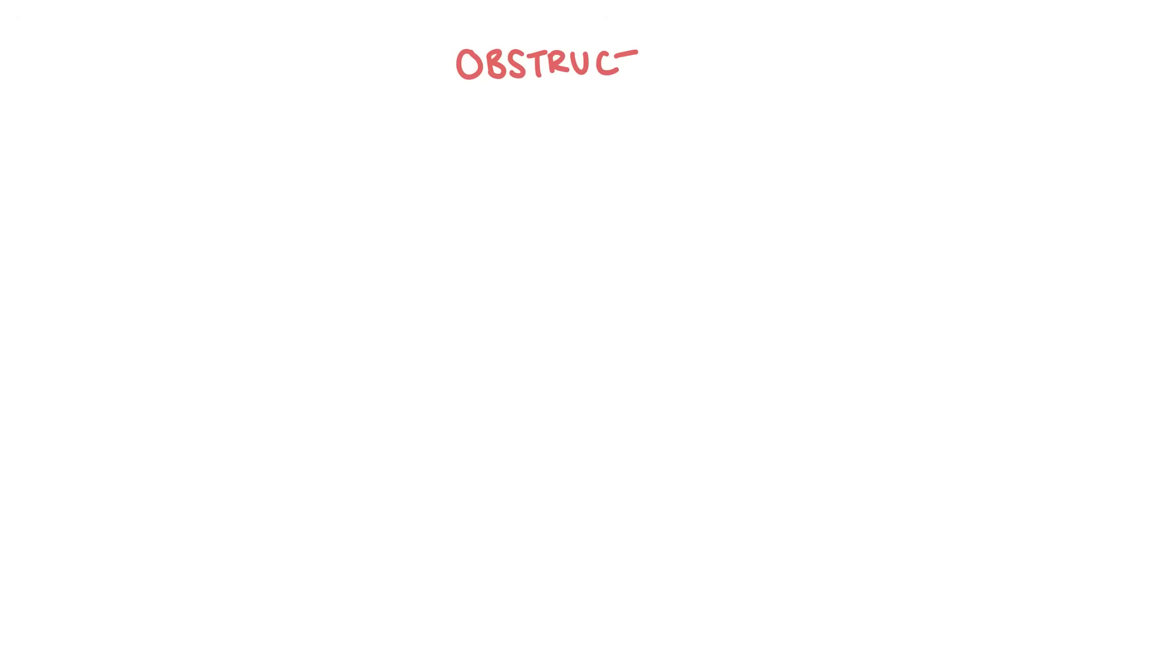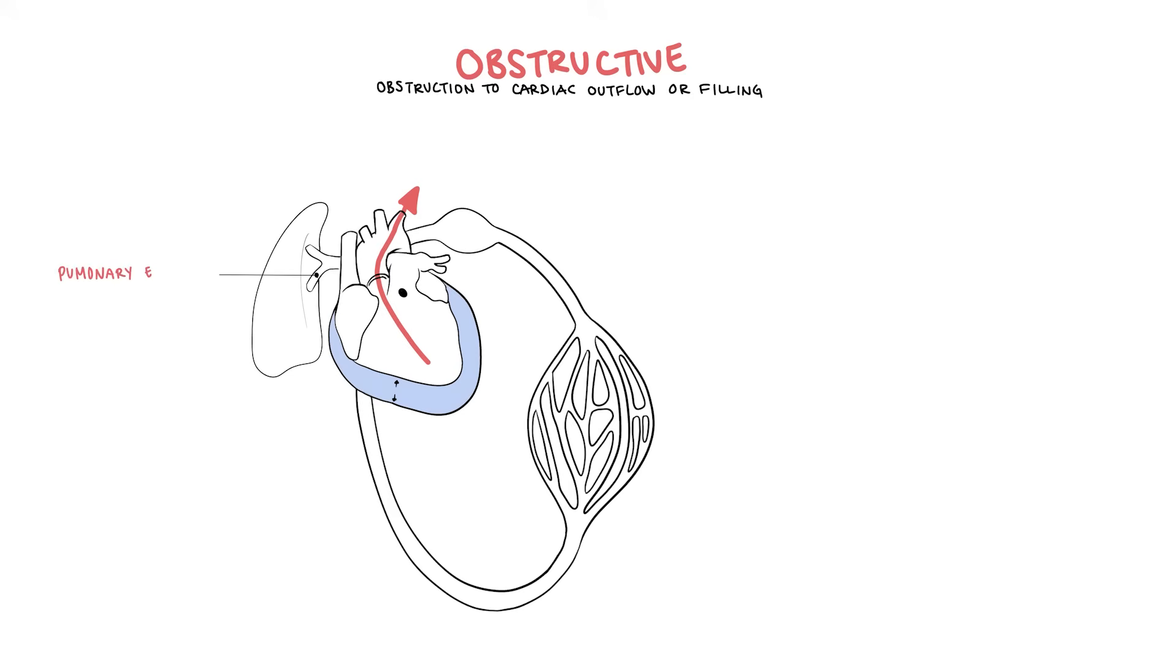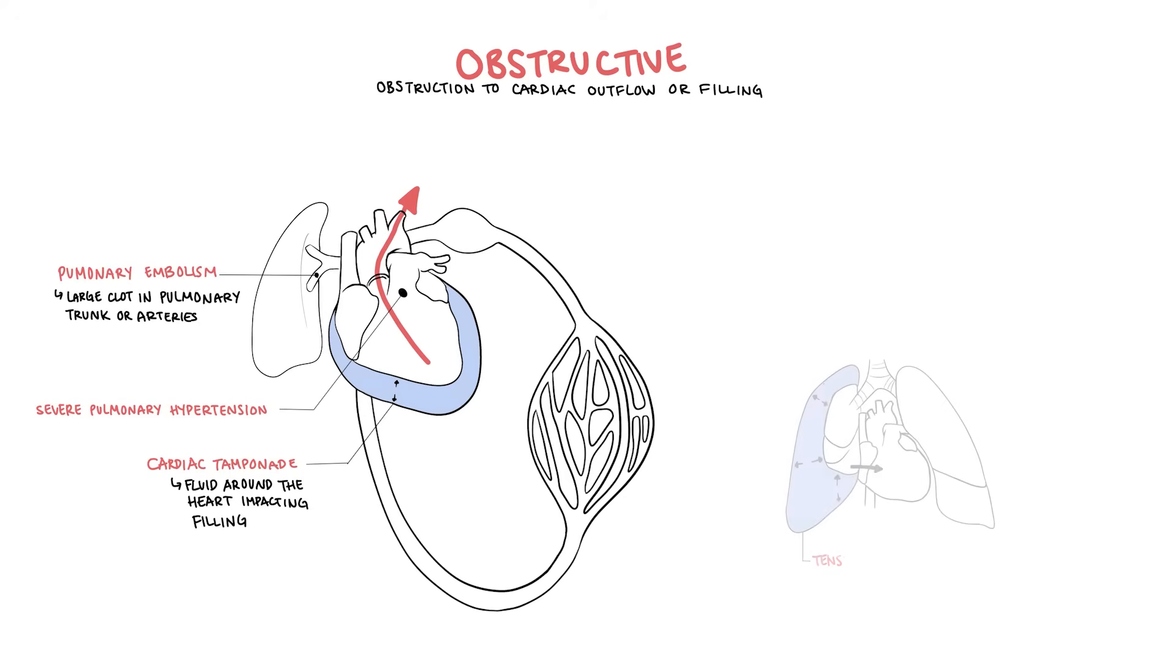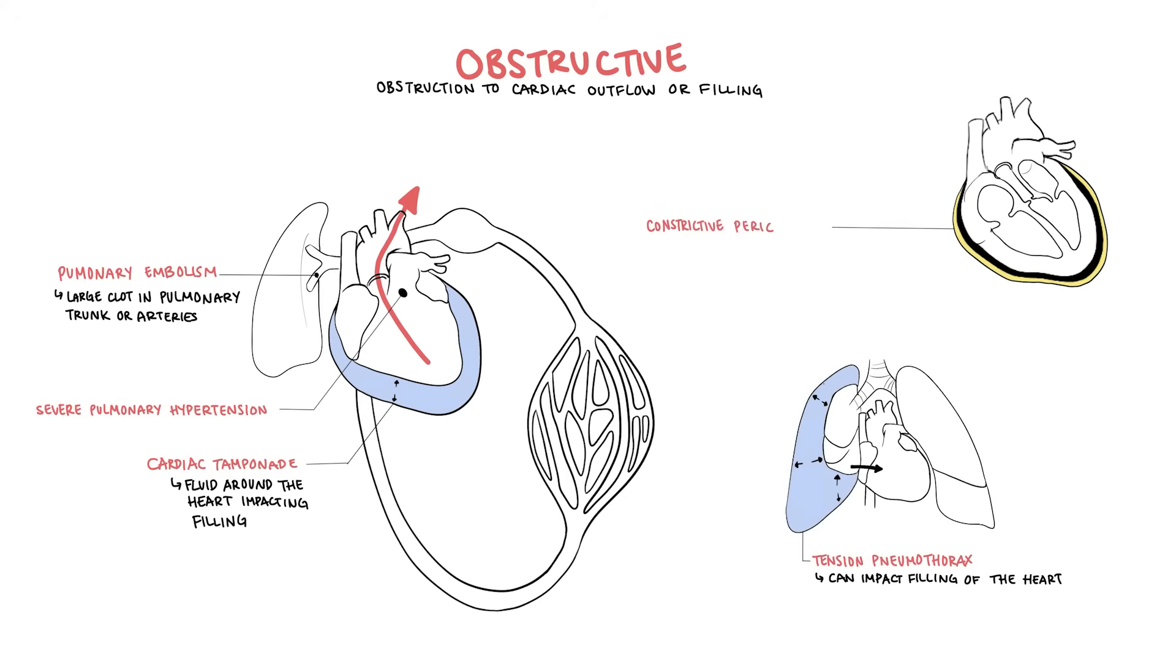The third type of shock is obstructive shock and this is caused by an obstruction to cardiac outflow or filling. This can result from pulmonary embolism which is a large clot in the pulmonary trunk or artery, severe pulmonary hypertension, cardiac tamponade which is where you have significant amount of fluid around the heart impacting filling of the heart, tension pneumothorax which will impact filling of the heart, constrictive pericarditis where you have thickened and fibrotic pericardium, restrictive cardiomyopathy, stiffening of the heart chambers, as well as abdominal compartment syndrome which can also cause an obstructive shock. Obstructive shock really causes obstruction of cardiac output through multiple ways. Therefore, reducing cardiac output means you have a reduced mean arterial pressure and therefore a low perfusion to organs.